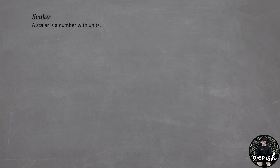A scalar is a number with units and it can be positive, negative, or zero. But sometimes, a scalar isn't enough to adequately describe a physical quantity. In a lot of cases, we need direction.